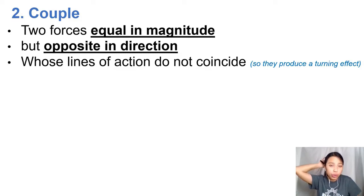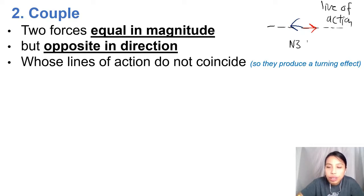but the line of action do not coincide. Meaning, if we had Newton's third law, we would say something like this. Equal magnitude, opposite direction, but their line of action is the same. Means that is what we call the line of action. These are what we call N3 Newton third law pairs.